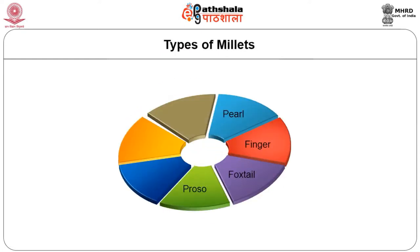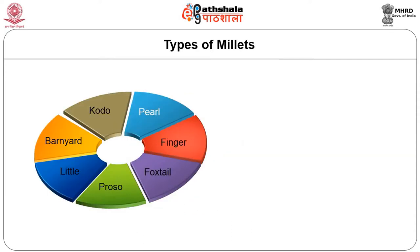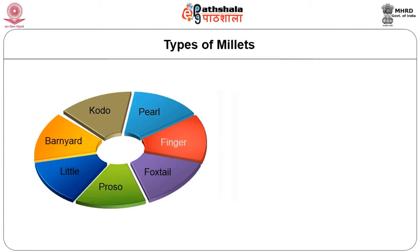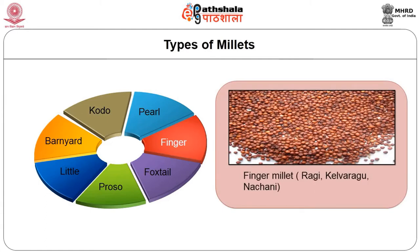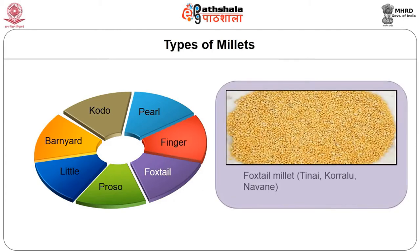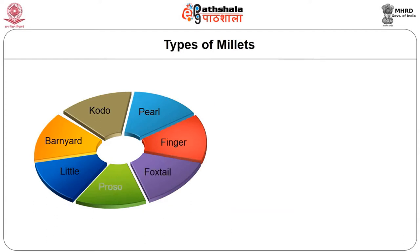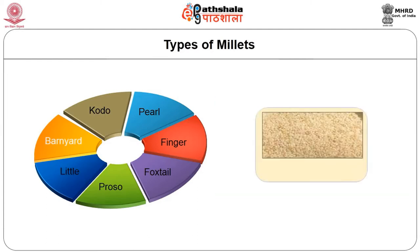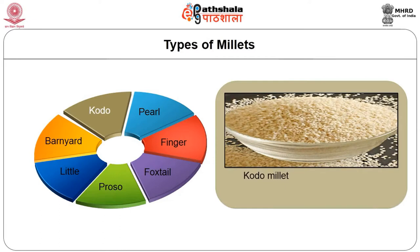Let us see the different types of millets. Please remember there are different names — different regional languages offer different names for millets. There are four major types. First is pearl millet, also known as Bajra, Bajri, Saji, Kambu (C-A-M-B-U), and Sajalu. Finger millet is locally known as Raghi, Kevaragu, and Natchani. Foxtail millet is Tinai, Korallu, and Navane. Proso millet is also called Common millet, Broomcorn millet, Hog millet, or White millet. Then you have Little millet, Barnyard millet, and Kodo millet — these are the common varieties found in India.